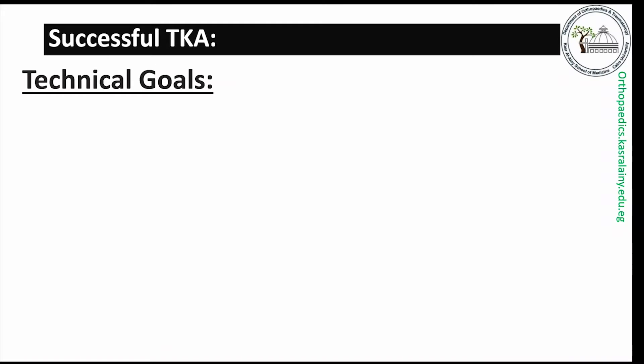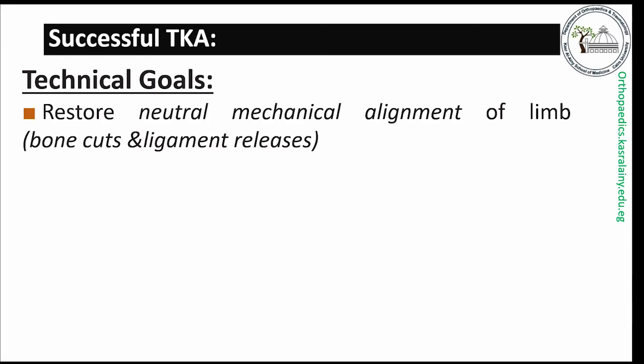After reviewing the relevant anatomical features for TKA, we will discuss the important targets for a successful TKA. The first is to restore neutral, non-deviated mechanical alignment in order to achieve even distribution of stresses over the replaced joint.